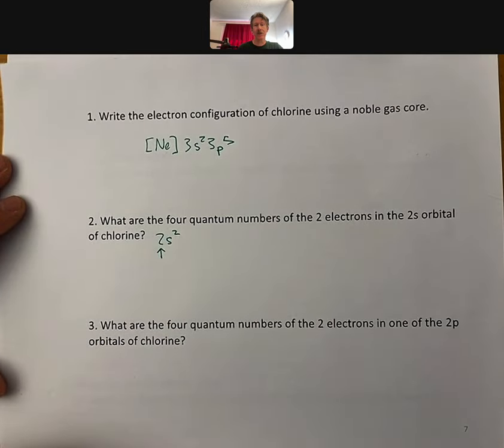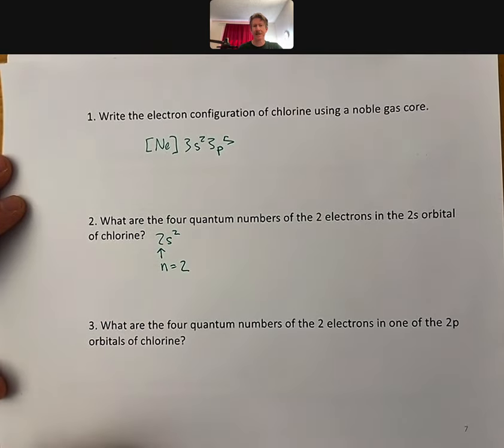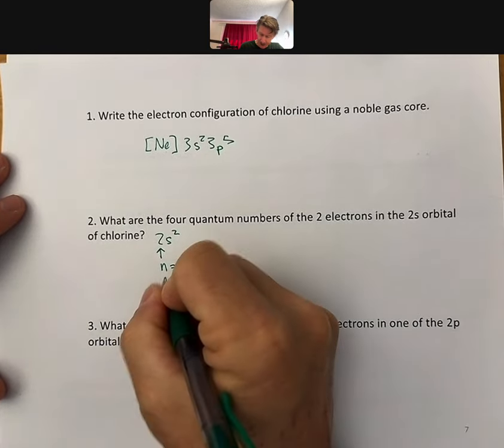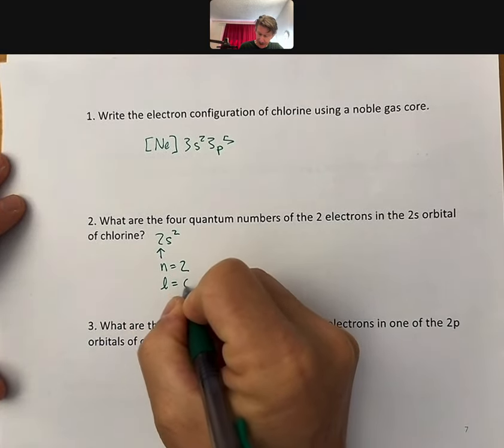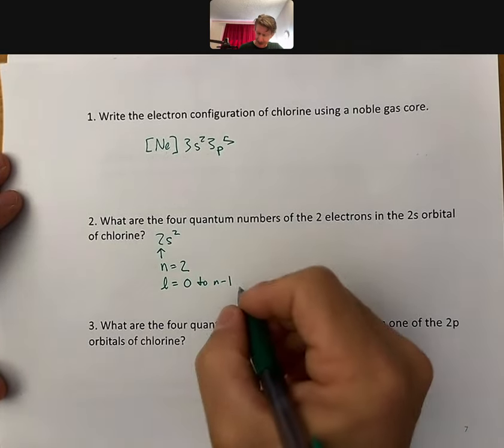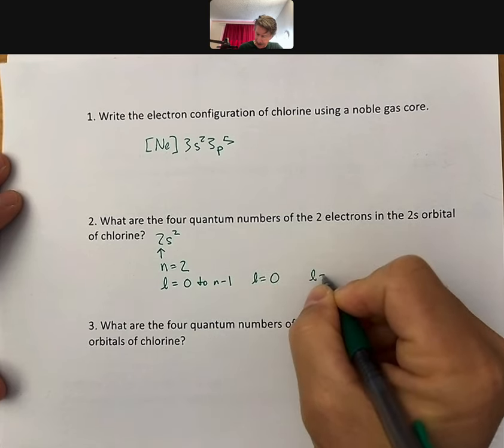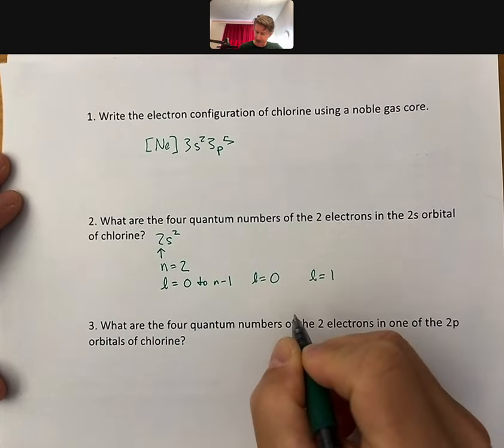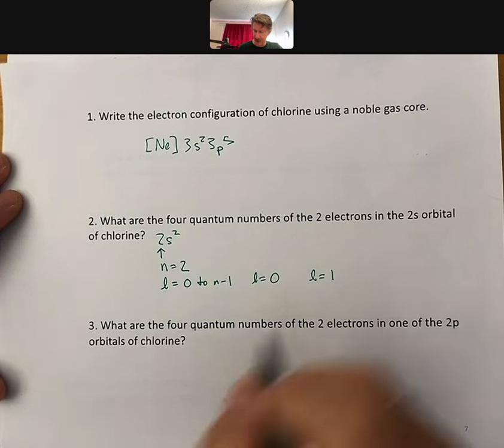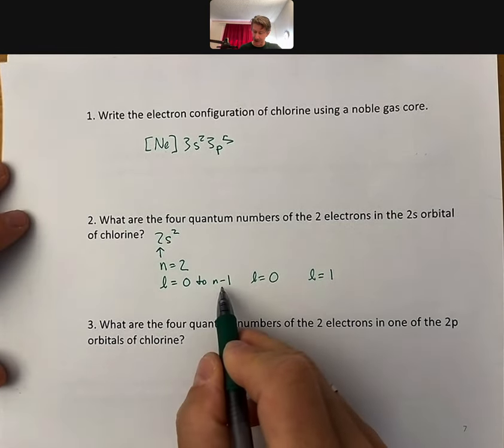The number 2 is the principal quantum number, that's n, so n equals 2 for this. And for n equals 2, l goes from 0 to n minus 1, which means that there is an l equals 0 and an l equals 1. Hold on, 2s. Yeah, took me a second there. Because it doesn't go to 2, so n equals 2, 2 minus 1 is 1.